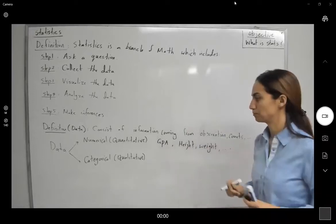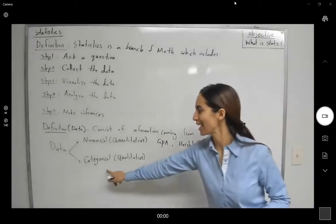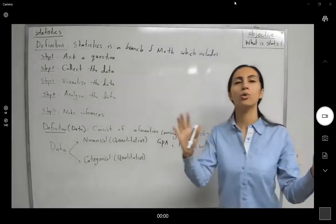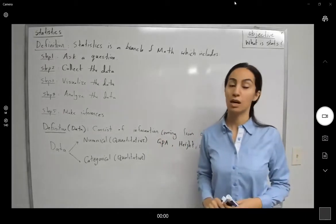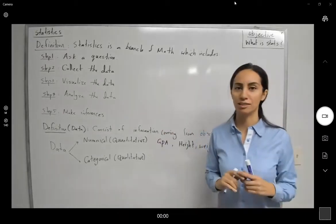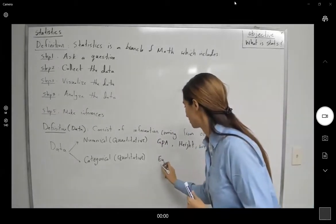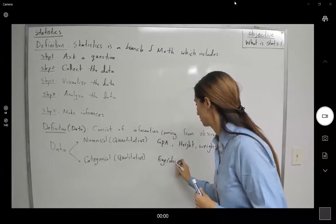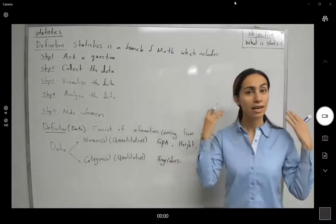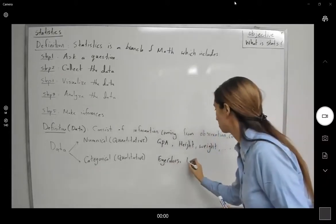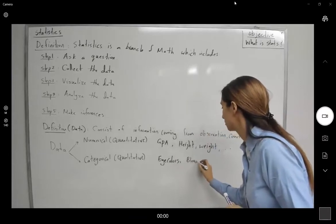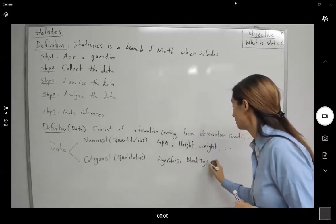What about categorical data or qualitative data? It's coming from the quality, like eye colors, hair colors, or type, and so on.